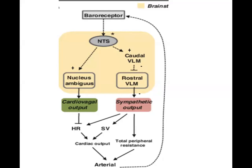When blood pressure decreases, the number of impulses the baroreceptors send will decrease. The nucleus tractus solitarius interprets that blood pressure has decreased. So it will directly stimulate the RVLM, causing stimulation of sympathetic outflow, increase in force of contraction of the heart, increase in heart rate, vasoconstriction, and it will inhibit CVLM — because CVLM has an inhibitory action on RVLM and we have to stimulate RVLM to increase blood pressure.